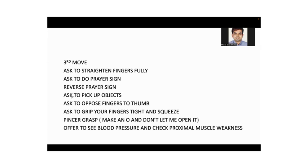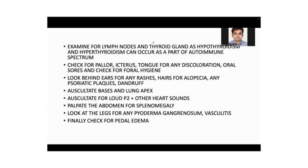Offer to check blood pressure — this is extremely important if you are working up a mixed connective tissue disorder, SLE, or scleroderma. Check for proximal muscle weakness from distal to proximal. Examine the lymph nodes and thyroid gland, as hypothyroidism is associated with rheumatoid arthritis and also occurs in the autoimmune spectrum. Check for pallor, icterus, tongue discoloration, oral ulcers, and oral hygiene. Look behind the ears for rashes and check the hair for alopecia areata, which can be associated with autoimmune polyendocrine syndrome alongside rheumatoid arthritis.